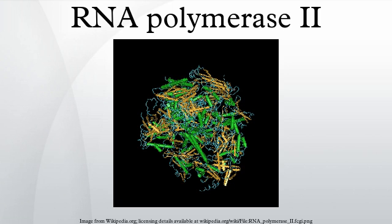Enzymes can catalyze up to several million reactions per second. Enzyme rates depend on solution conditions and substrate concentration. Like other enzymes, POLR2 has a saturation curve and a maximum velocity, a Km and a kcat. The specificity constant is given by kcat/Km. The theoretical maximum for the specificity constant is the diffusion limit of about 10⁸ to 10⁹, where every collision of the enzyme with its substrate results in catalysis. In yeast, mutation in the trigger loop domain of the largest subunit can change the kinetics of the enzyme.